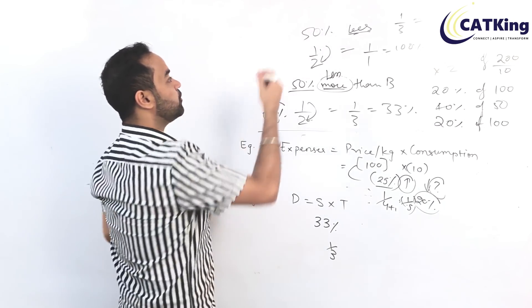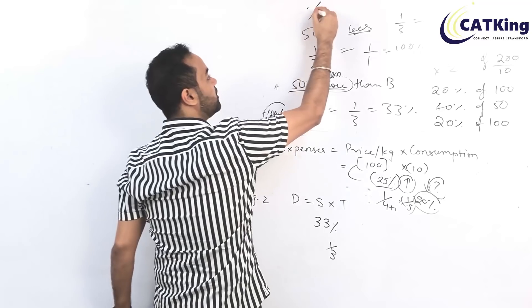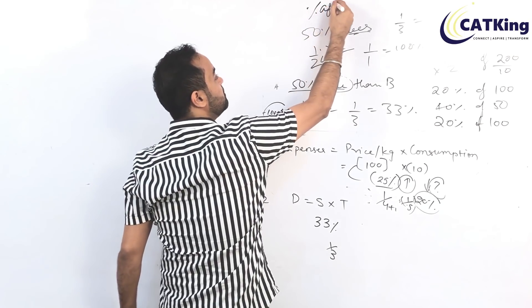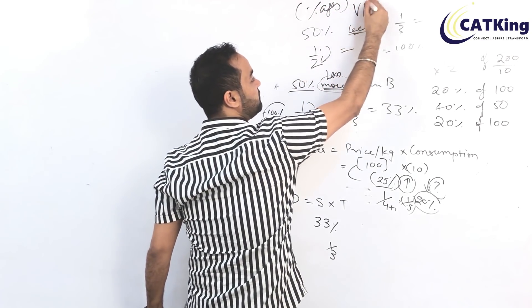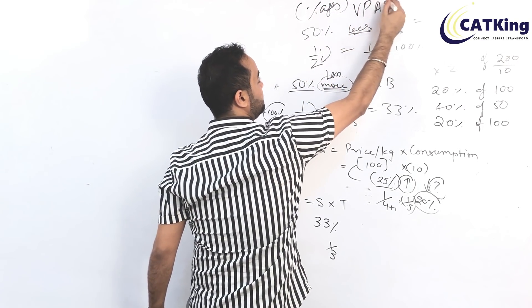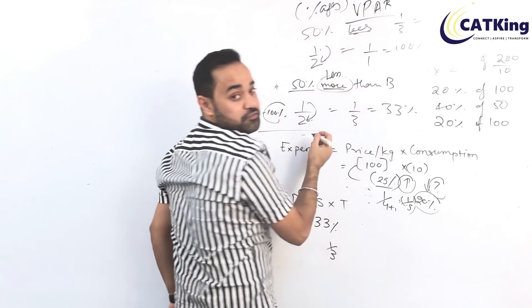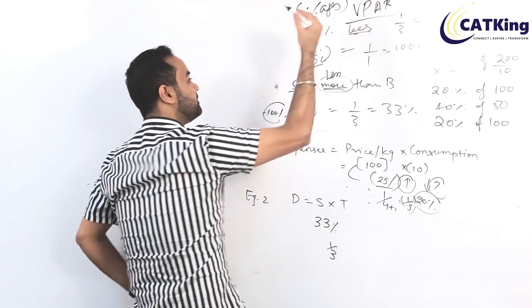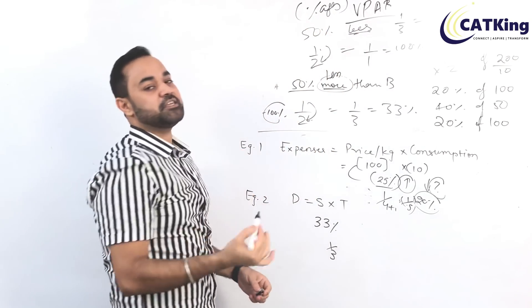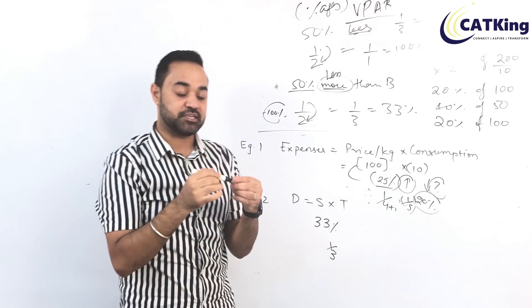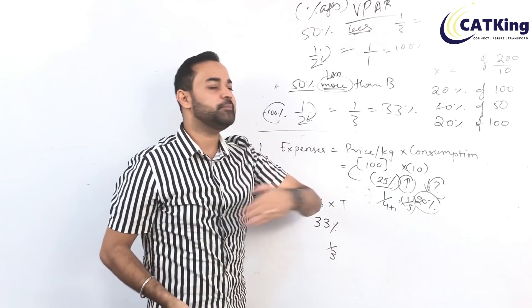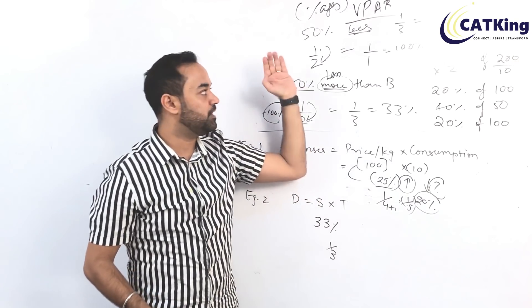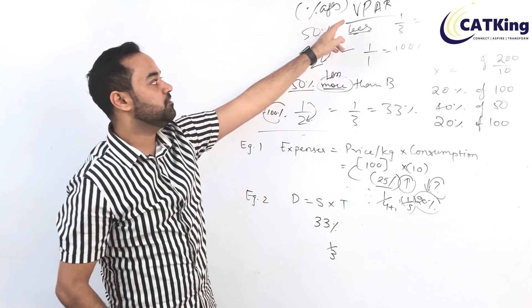Let's do a shortcut from my favorite chapter called percentages. First of all, I have to introduce VIPAR. What is VIPAR? Vedic math, Percentages, Averages, Ratios — Cat King's classes. We have to add VIPAR.